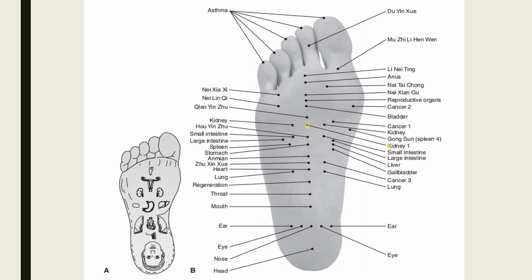Kidney 1, Yongquan, is located on the midline at the junction between the anterior one-third and posterior two-thirds of the sole of the foot, at 7 units from the heel. Indications include high blood pressure, vertex pain, infant convulsions, shock, and seizure. The kidney point is located 1 unit medial and lateral to the Kidney 1 point, at 7 units from the heel. Indications include high blood pressure, schizophrenia, acute low back pain, and urinary retention.